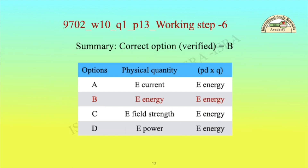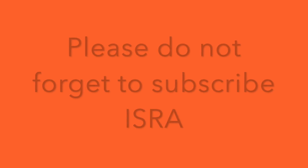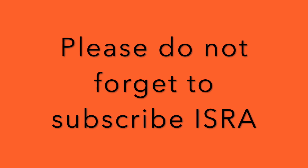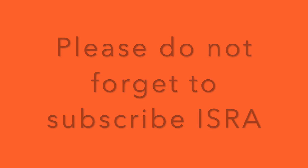Working step 6 — Summary: The correct option verified is B. Looking at the table with three columns — options, physical quantity, and the product of PD and Q — the only option matching is option B. Therefore option B is the correct answer. Please subscribe to ISRA Science Education to get new updates.